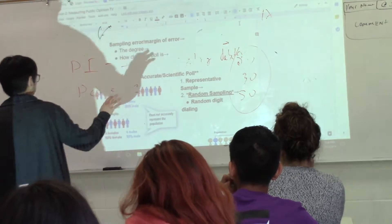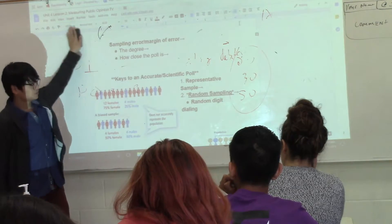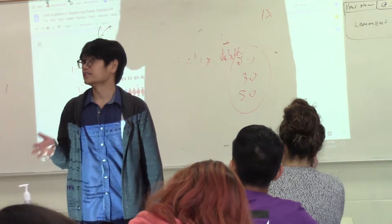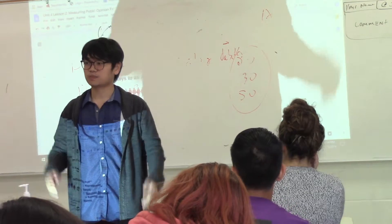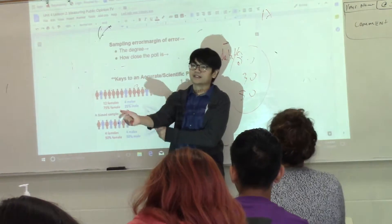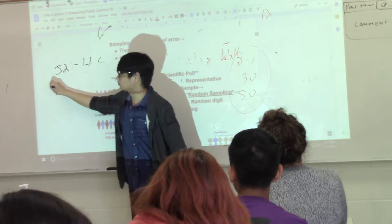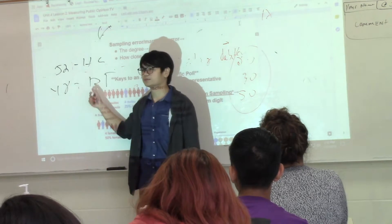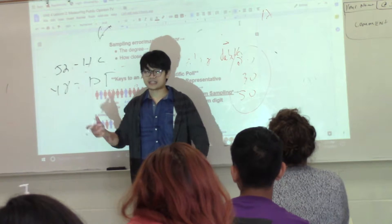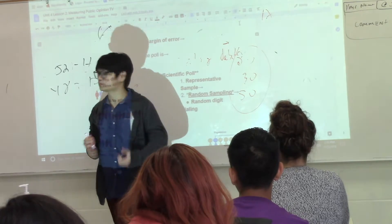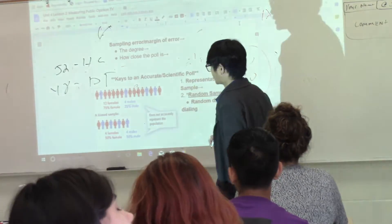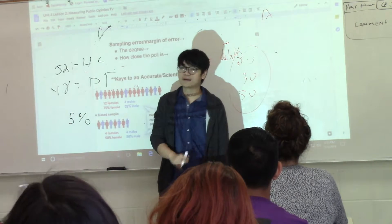Before we talk about what makes a poll accurate and scientific, you need to know what sampling error or margin of error is. In every poll there is a standard error, also called sampling error or margin of error — usually written as a percentage. It tells you how accurate the poll is to the actual population. For example, a poll says 52% of Texans voted for Hillary Clinton and 48% for Donald Trump. Is that the real number? We didn't ask every Texan — we asked a sample.